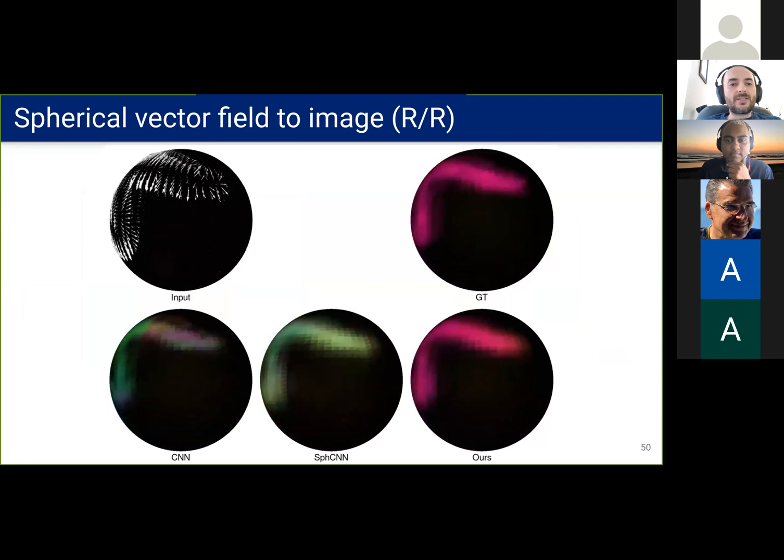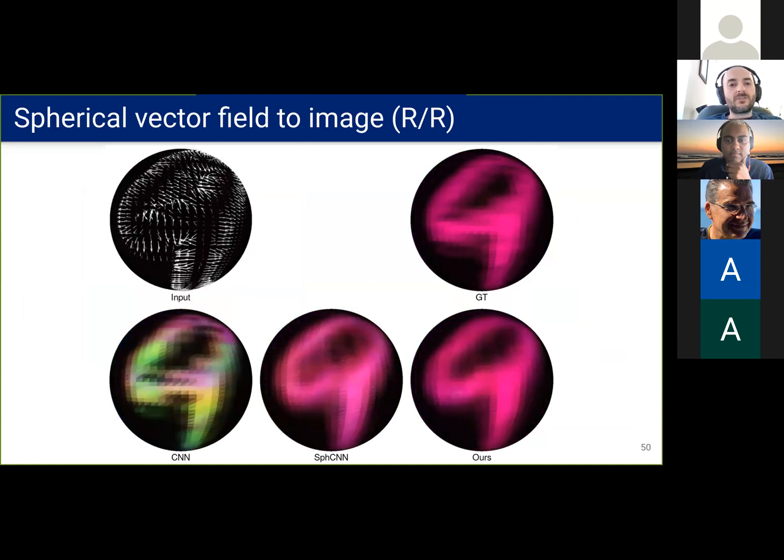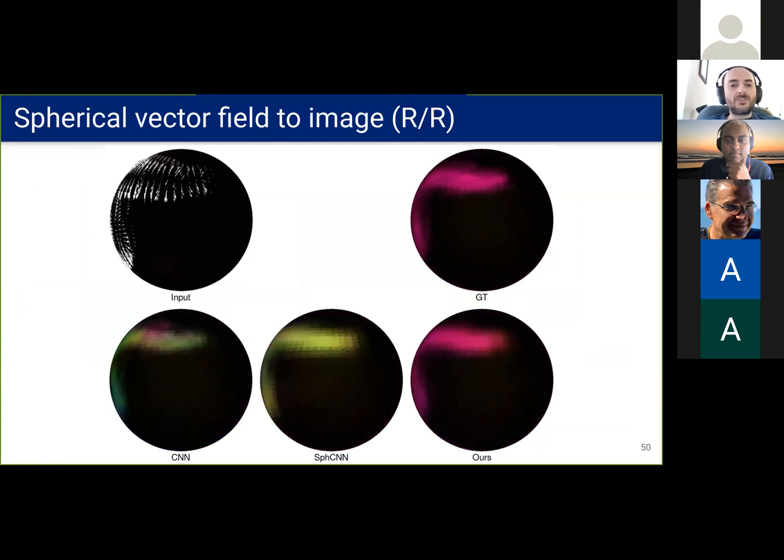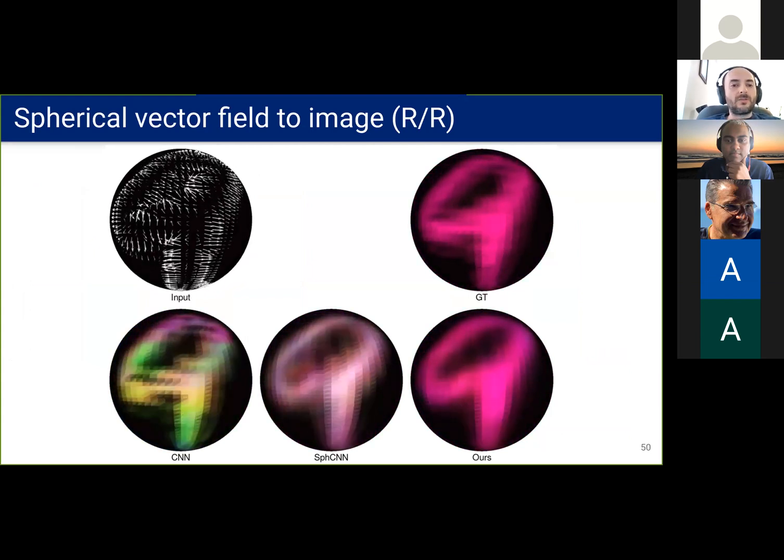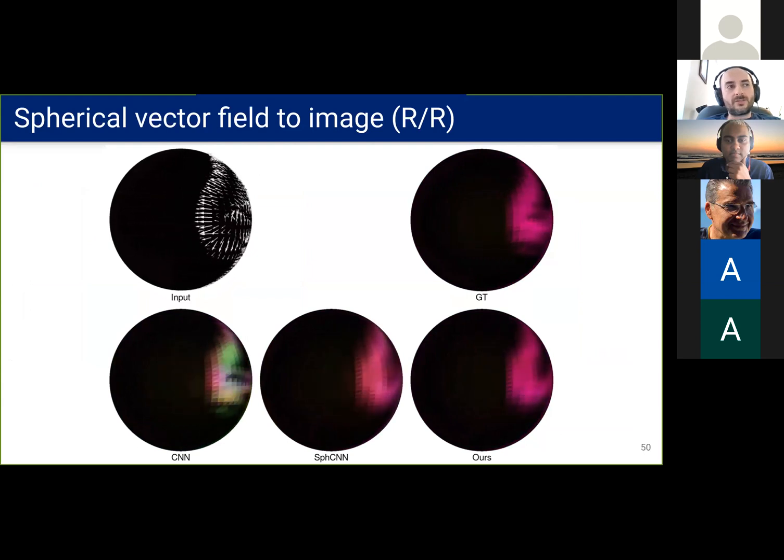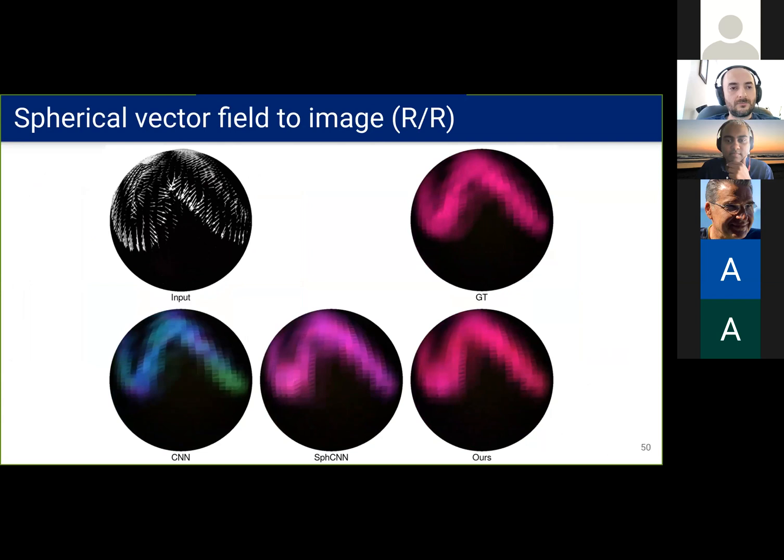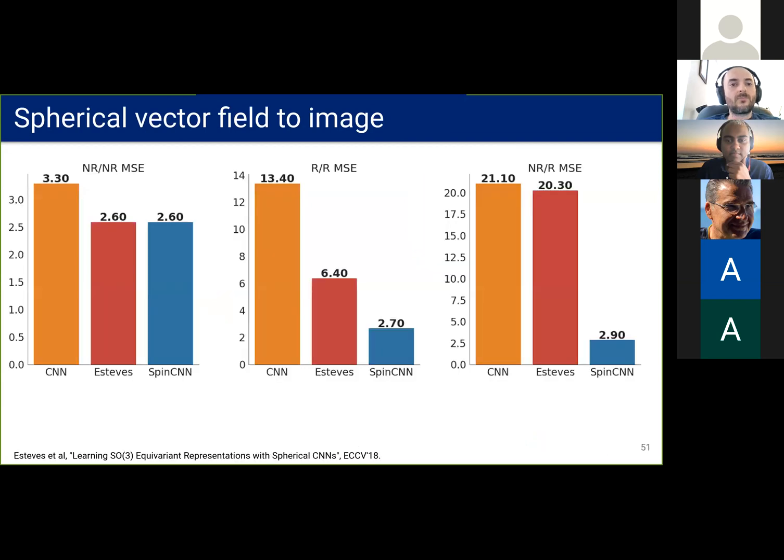And we also run dense prediction tasks. The first is to predict an image from an input vector field on the sphere. We set each target digit to a different color. Now the ground truth and our outputs are on the right. And here are the numbers for this experiment. The spin-weighted networks do much better on the rotated modes.